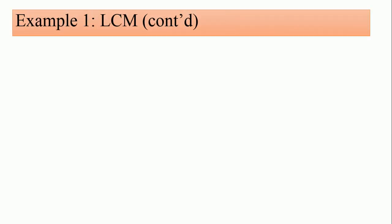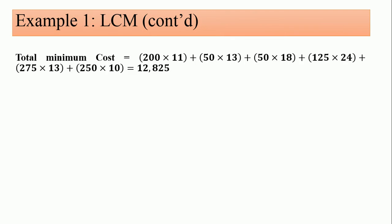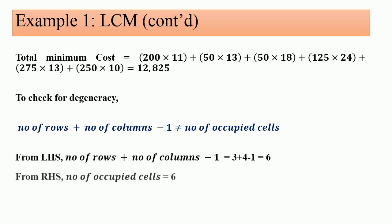The total minimum cost will give birth to what you are about to see now, which is 12,825. To test for degeneracy, the number of rows plus number of columns minus one, if not equal to number of occupied cells, the solution is degenerate, otherwise non-degenerate. We check through this to establish that it is a non-degenerate solution.